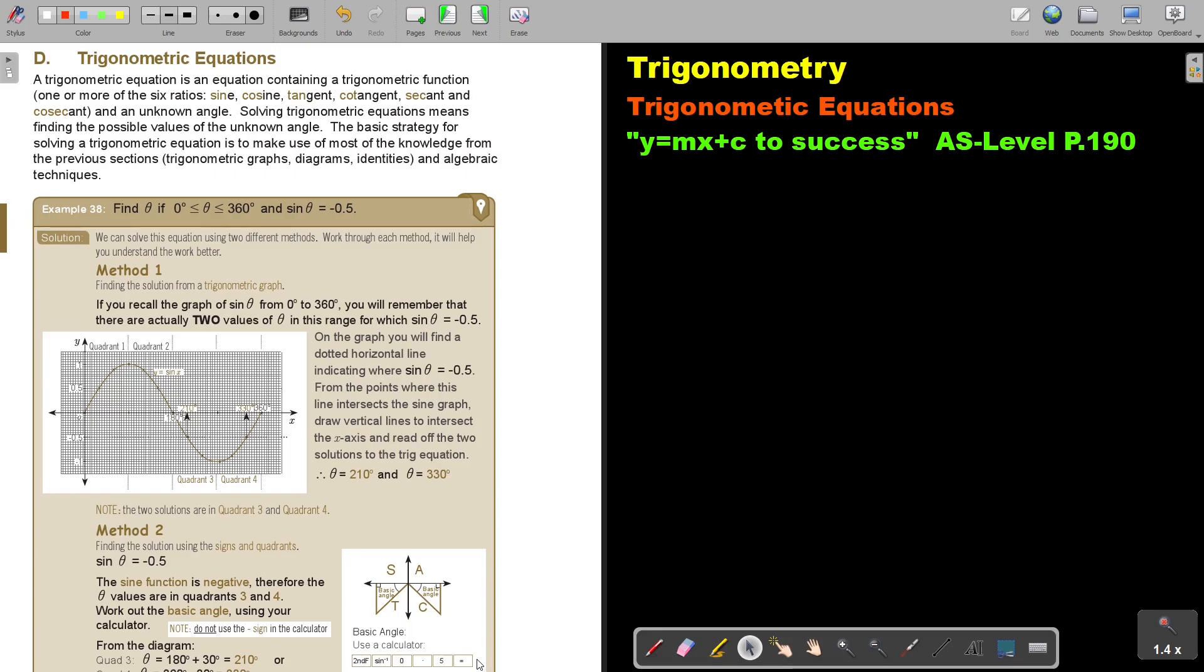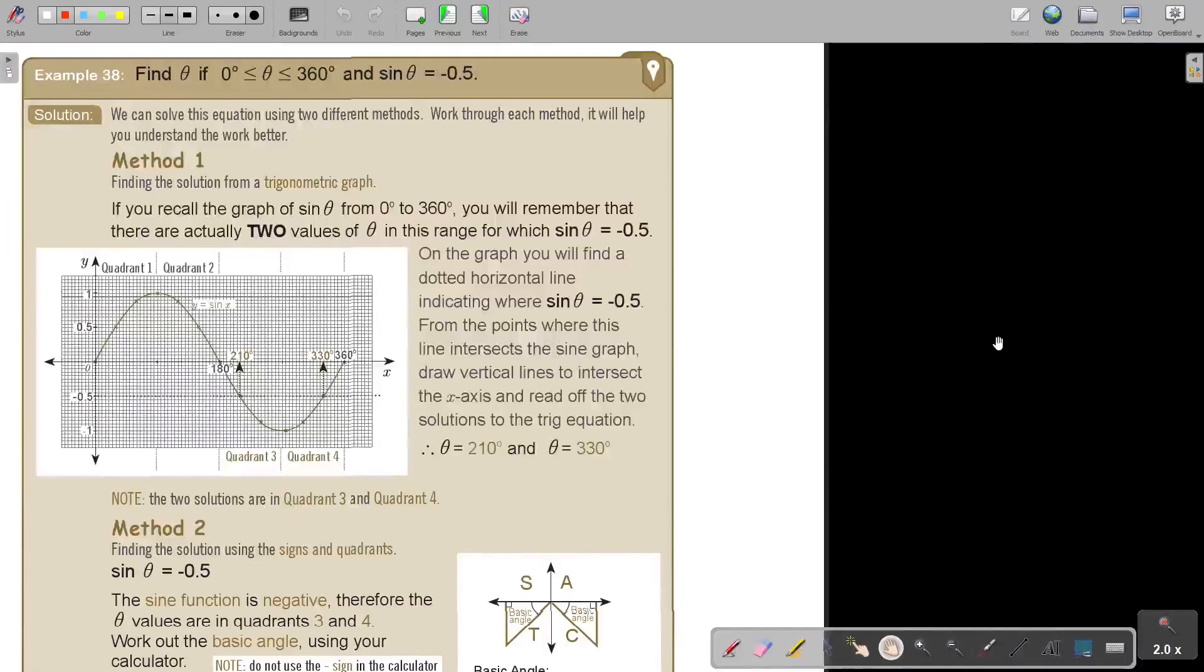Let's look at an example. Find θ if θ is greater than or equal to zero and less than or equal to 360°, and sin θ = -0.5. There's the unknown angle, there is the ratio, and it's negative. We can solve this equation using two different methods.